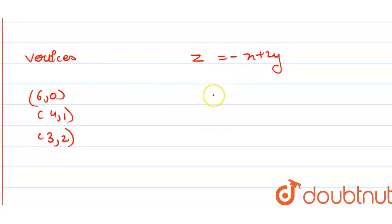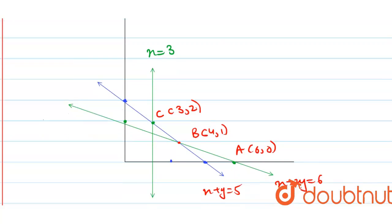If I put 6, 0 here then it becomes minus 6. 4, 1 will give you minus 2. This here as you can see is the maximum point. Since the feasible region is unbounded, therefore z has no maximum value as this is unbounded.